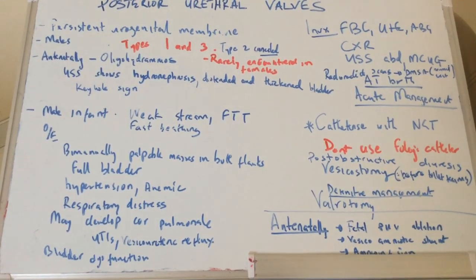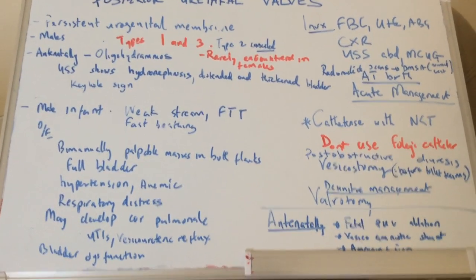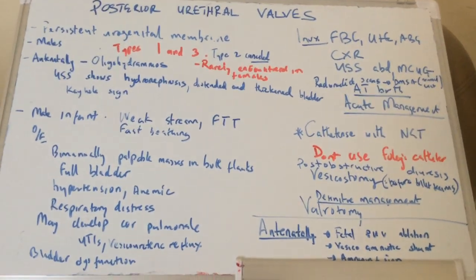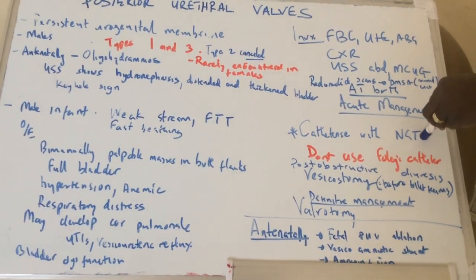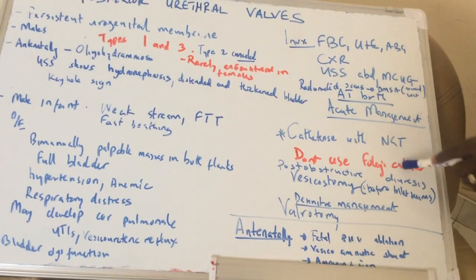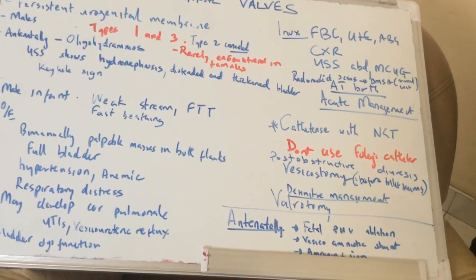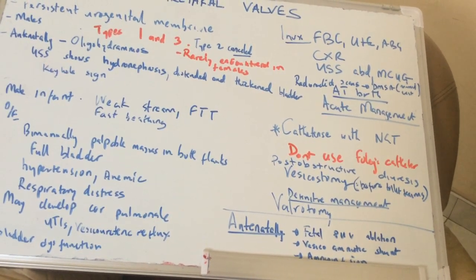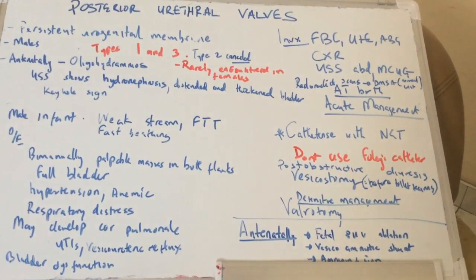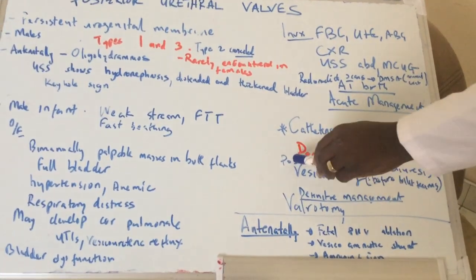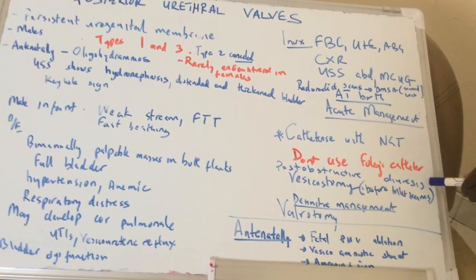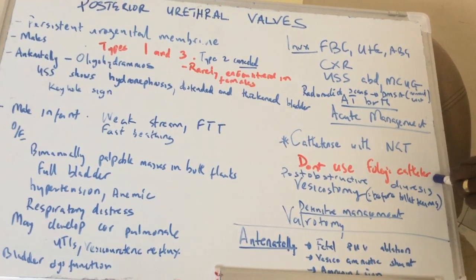At birth, or at postnatal diagnosis, you can start management. First, you need to relieve the obstruction — catheterize the patient with a nasogastric or urethral catheter, usually catheter size 5. A Foley catheter is not used because inflating the balloon can worsen the obstruction. After catheterization, there is usually post-obstructive diuresis — lots of fluid will be lost, so you need to watch for that and rehydrate accordingly.